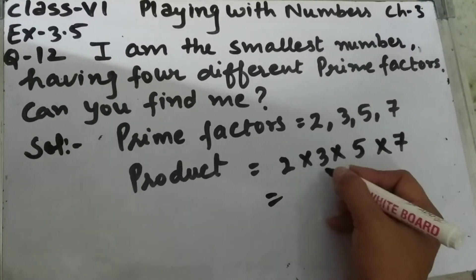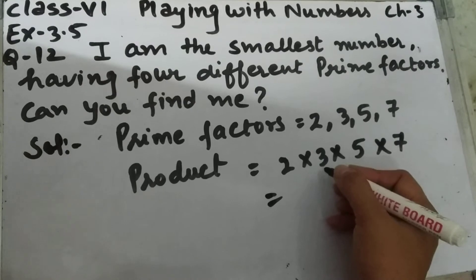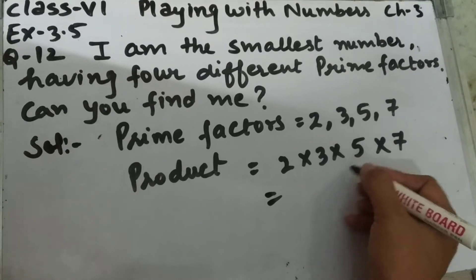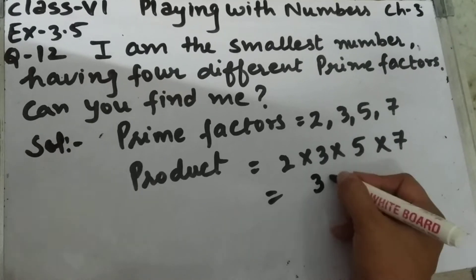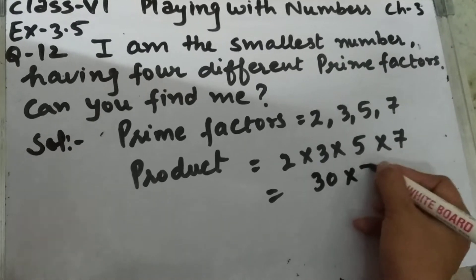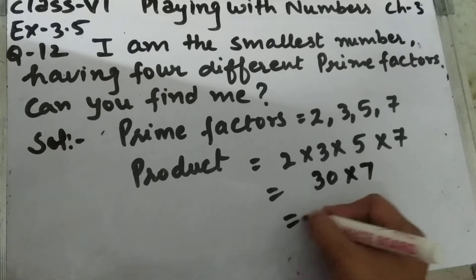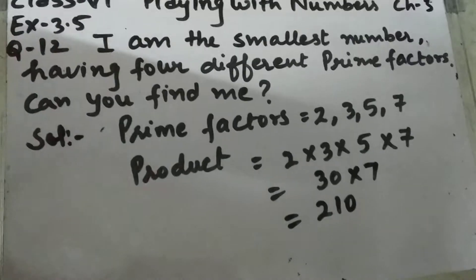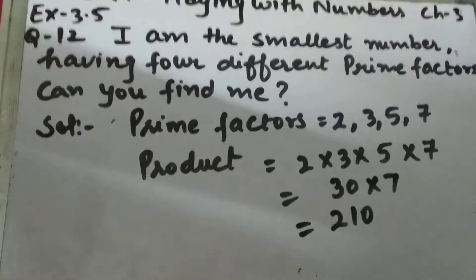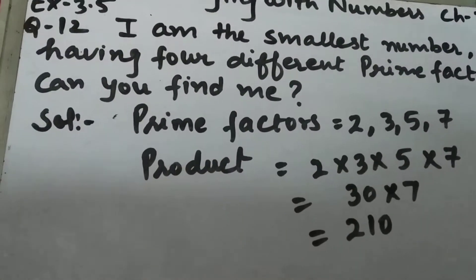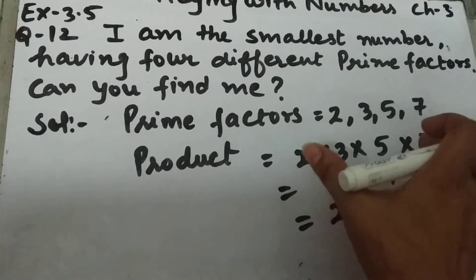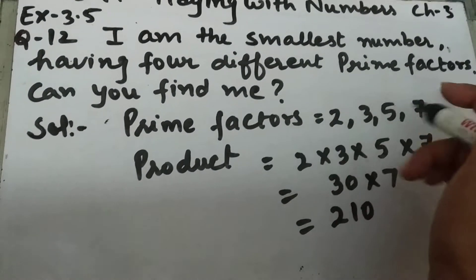2 multiplied by 3 is 6, multiplied by 5 is 30, and 30 multiplied by 7 is 210. So 210 is the smallest number which has 4 different prime factors.